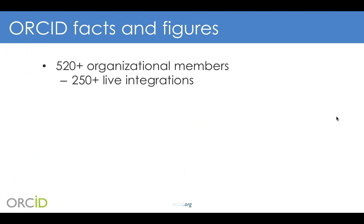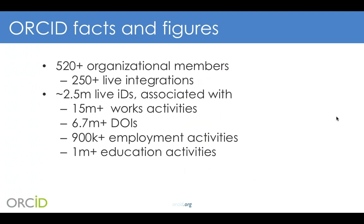We're now up to over 530 organisational members and over 250 live integrations. As of last Friday, we cracked — as you may have seen on Twitter — we now have over 2.25 million live ORCID IDs. Those are associated with well over 15 million works and activities, close to 7 million DOIs, getting up towards a million employment activities, and over a million education activities. So really a lot of information there.